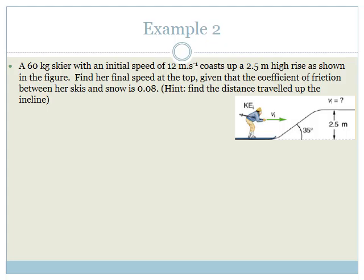A 60 kilogram skier with an initial speed of 12 meters per second coasts up a 2.5 meter high rise, as shown in the figure. Find her final speed at the top, given that the coefficient of friction between her skis and the snow is 0.08. Hint: find the distance traveled up the incline. Before you freak, grade 12s — realize this is quite a technical question. It's not easy, so let's take it in baby steps.